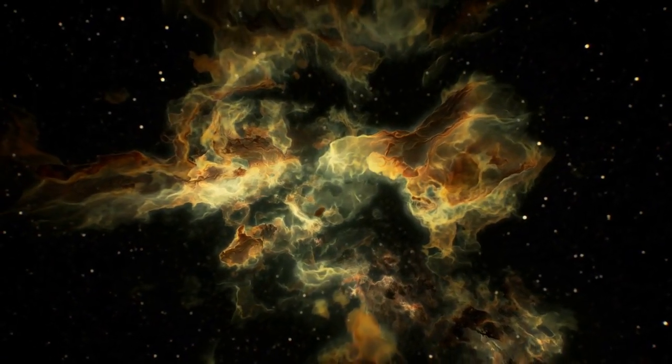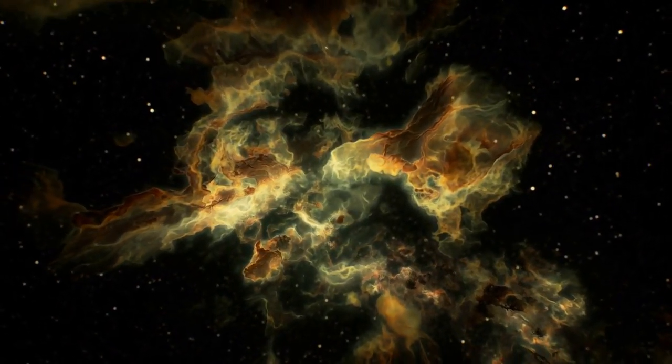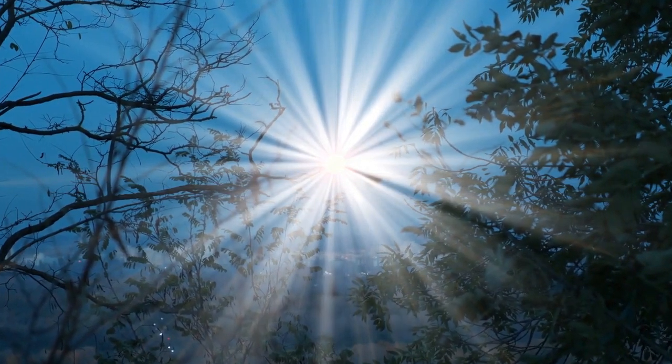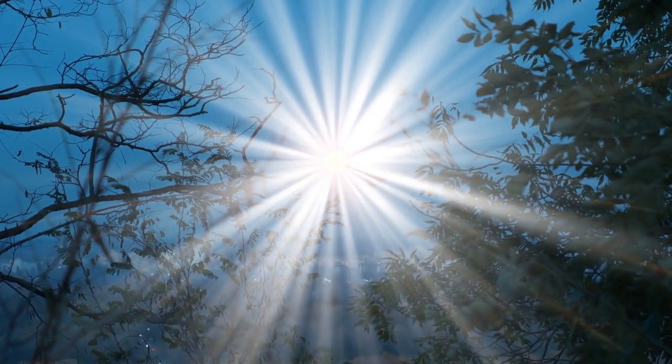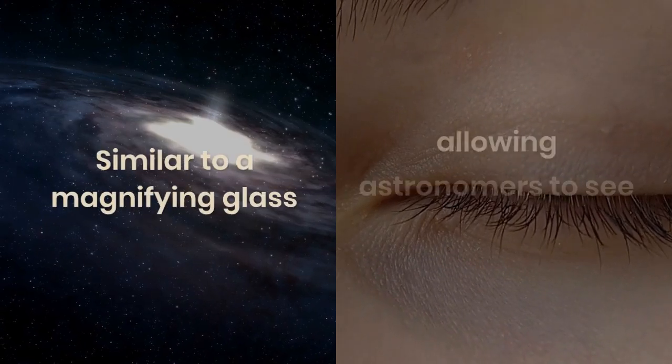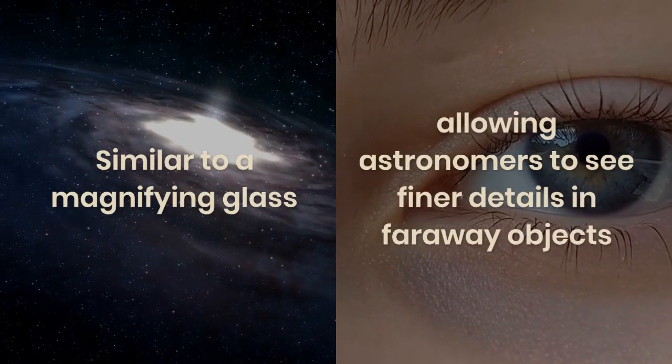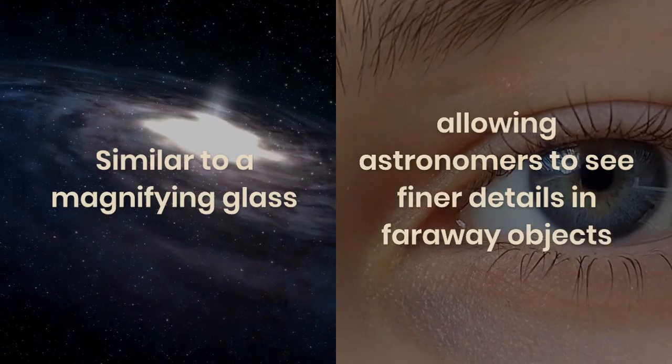One method to observe distant galaxies in detail is through gravitational lensing. This phenomenon occurs when a massive celestial body bends the path of light around it due to its strong gravitational pull. The effect is similar to a magnifying glass, allowing astronomers to see finer details in faraway objects.